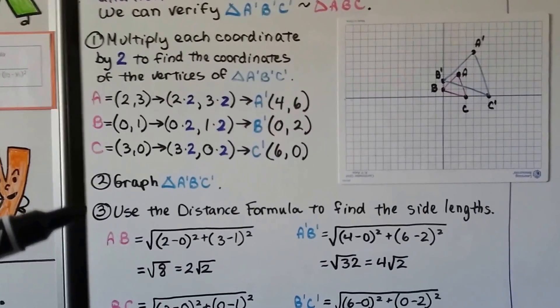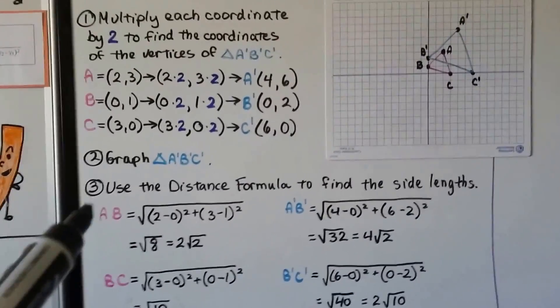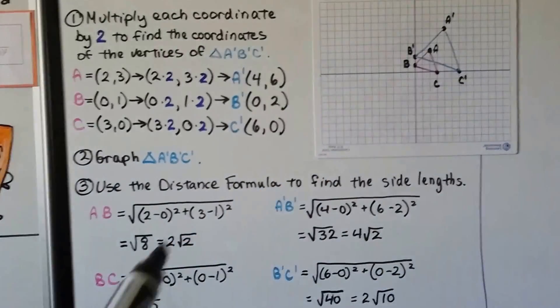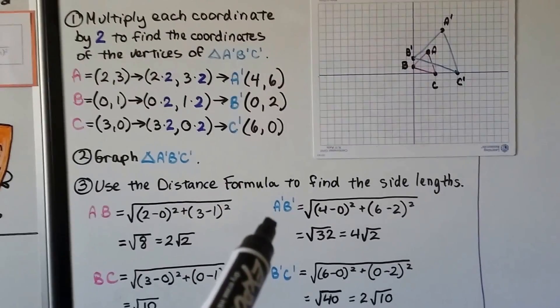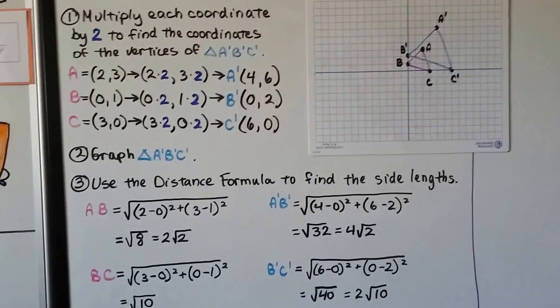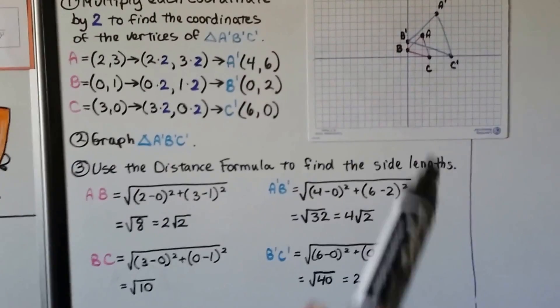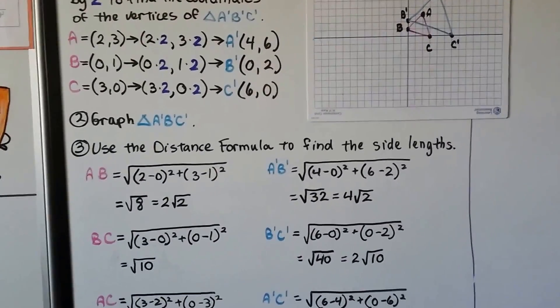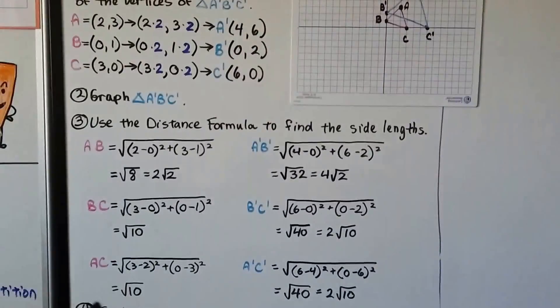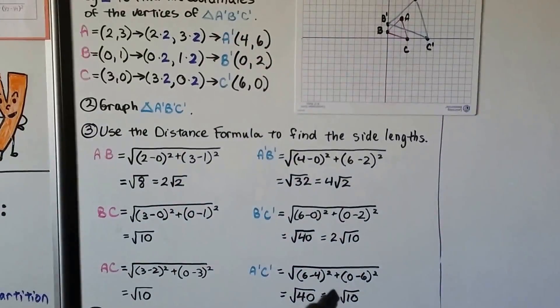Now we use the distance formula to find the side lengths. From A to B for the pink one is 2√2, and A'B' is 4√2 for the blue one. For BC, the bottom, that's √10, and for B'C', it's 2√10. For AC, this one on the right side is √10, and A'C' is 2√10.